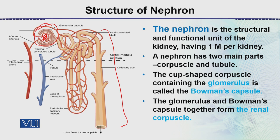The cup-shaped capsule containing the glomerulus is called the Bowman's capsule. Together, the glomerulus and Bowman's capsule are called the renal capsule. This is the standard nomenclature.